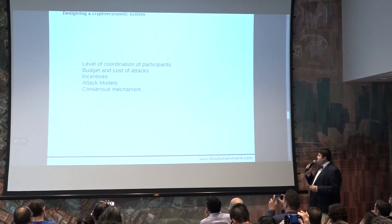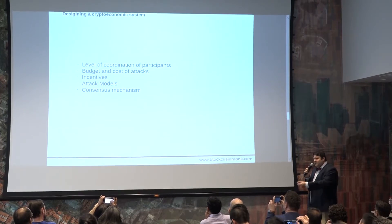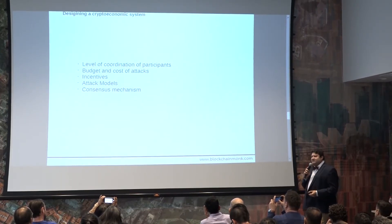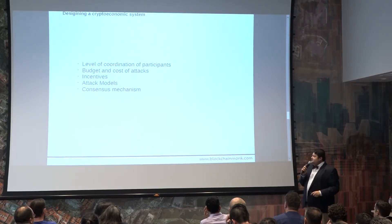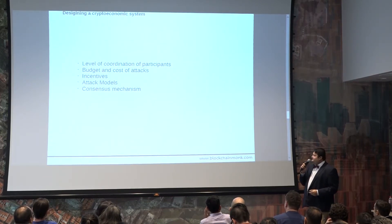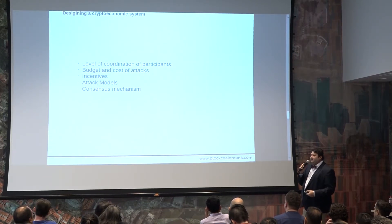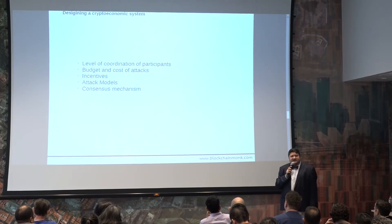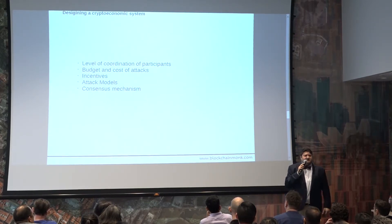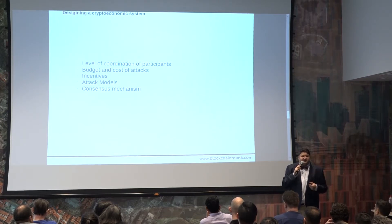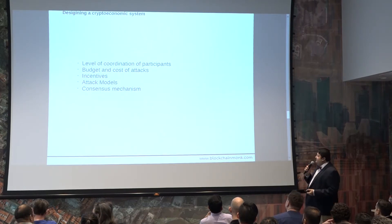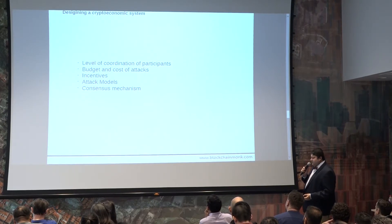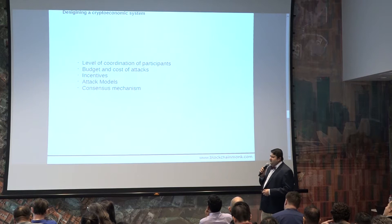In a crypto ecosystem, there are levels of coordination. People have to coordinate, they have to mine, and they have to budget the cost of attacks. If there's a bad actor who wants to come and attack, there are incentives for different actors and different types of attack models — it could be a 51% attack, it could be a selfish mining attack. There are many different ways in which a network can be attacked and taken down.